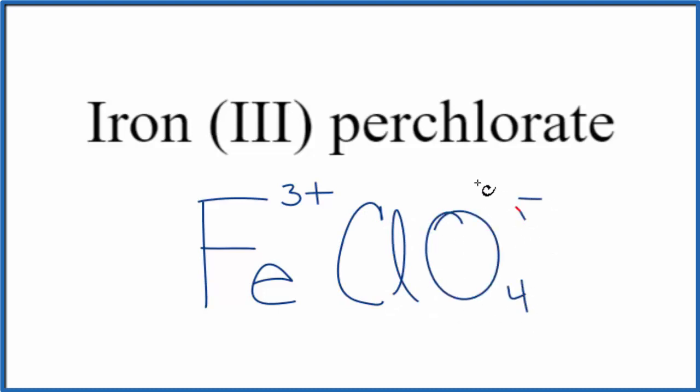That's our perchlorate ion and that minus is on the whole thing here. Because we have a metal and a group of nonmetals this is an ionic compound and these charges up here we have to have a net charge of zero.